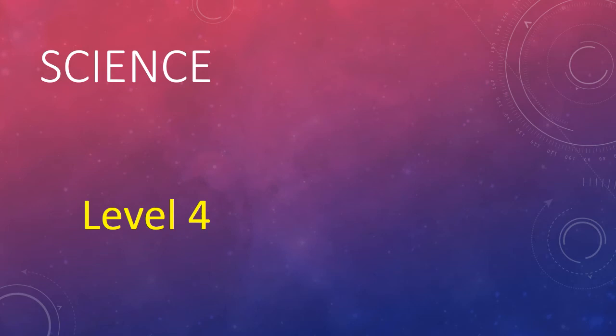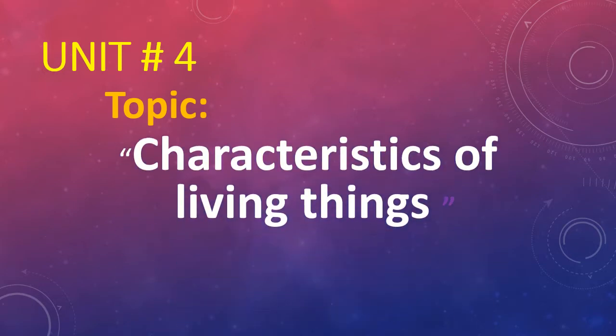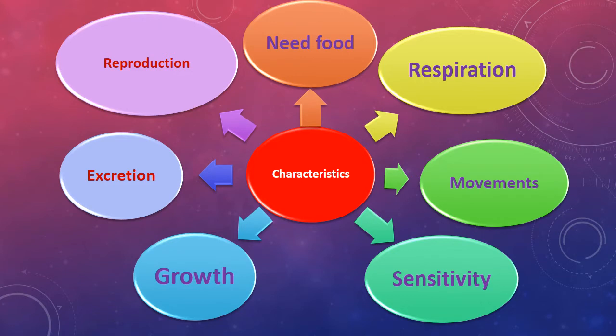Assalamu alaikum dear students, hope you are all doing well. In the previous lecture we started unit number four and discussed cells, plant cells, and animal cells. Today our topic is characteristics of living things. We will talk about the qualities that distinguish living things from non-living things. There are seven characteristics: need for food, respiration, movement, sensitivity, growth, excretion, and reproduction.